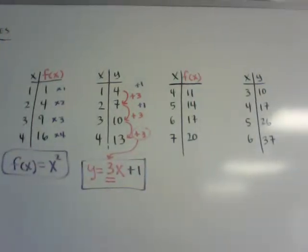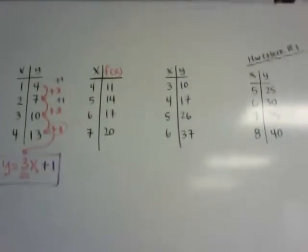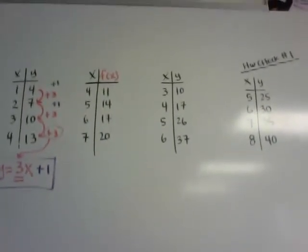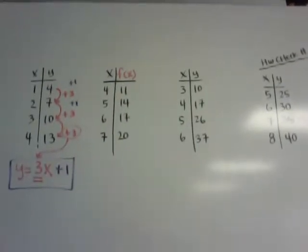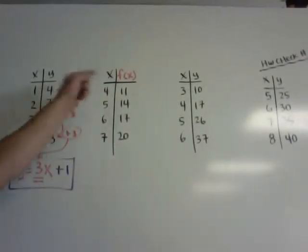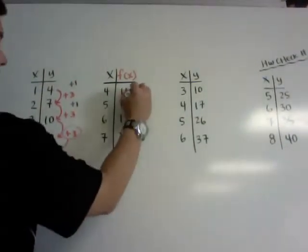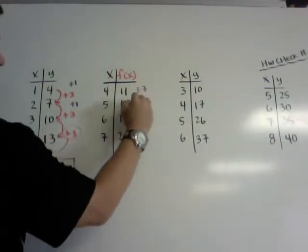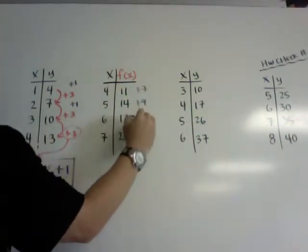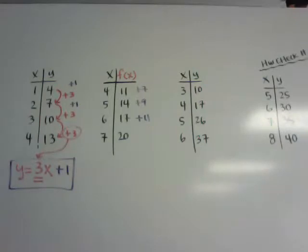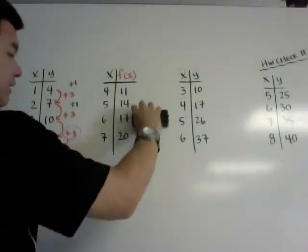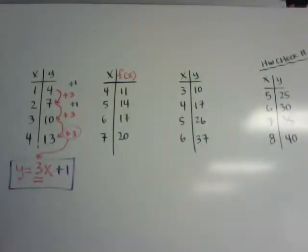I know that might have been kind of hard to see, so let's do another example. So I have this one here, and I can see from 4 to 11, I cannot multiply anything. So if I start adding, I can see I plus 7, over here I plus 9, I plus 11, or I added 11. So I know already it's going to be a different type of rule.